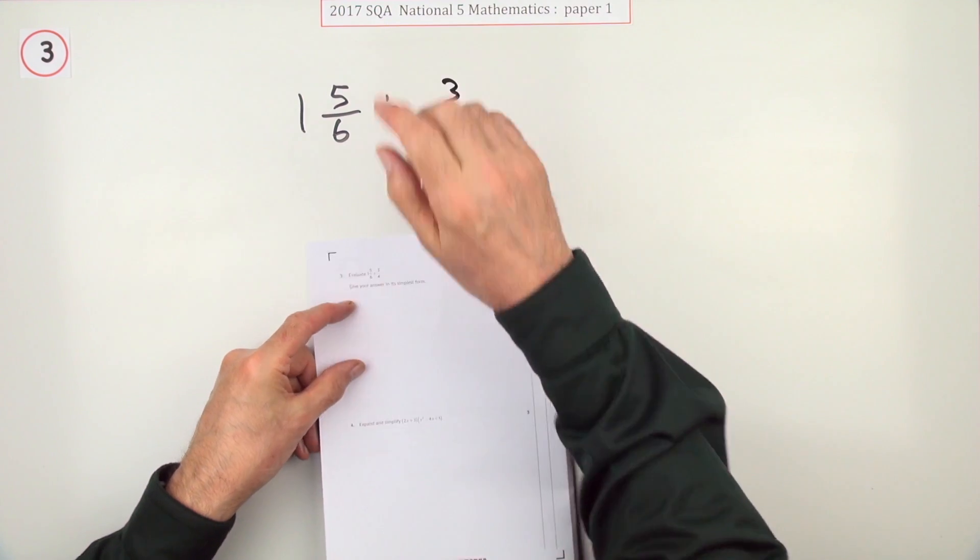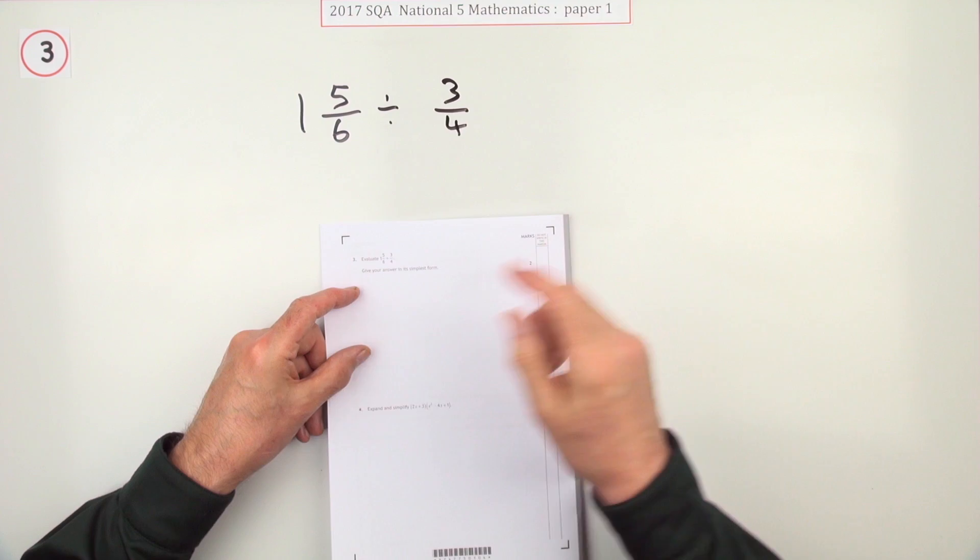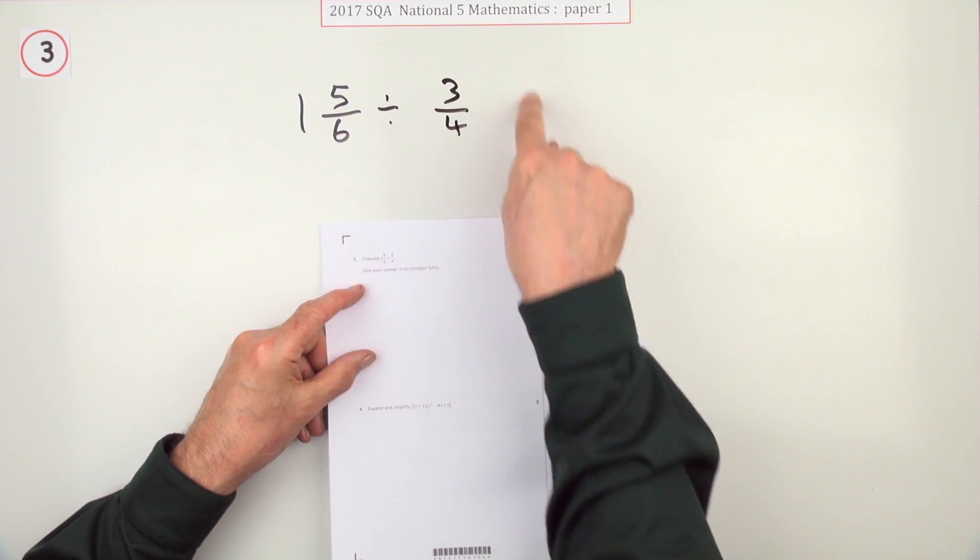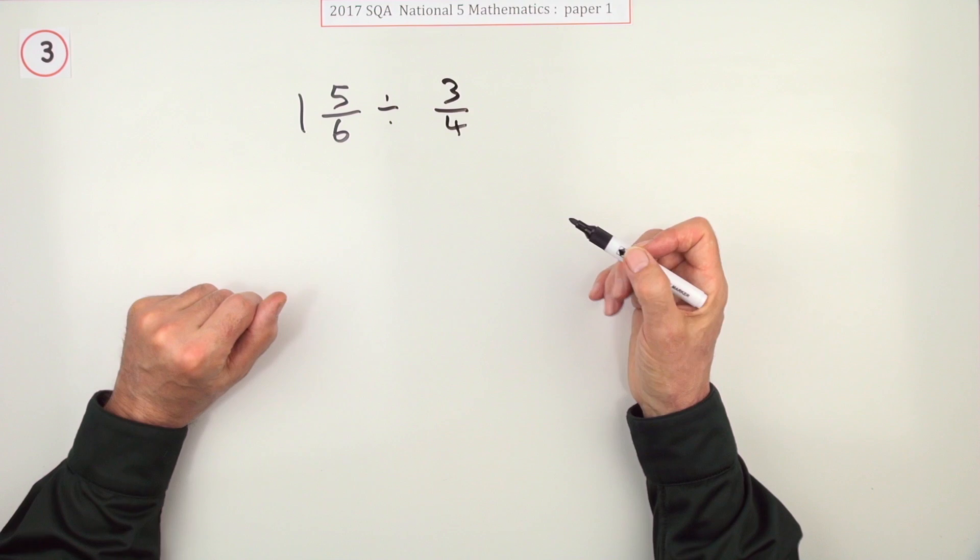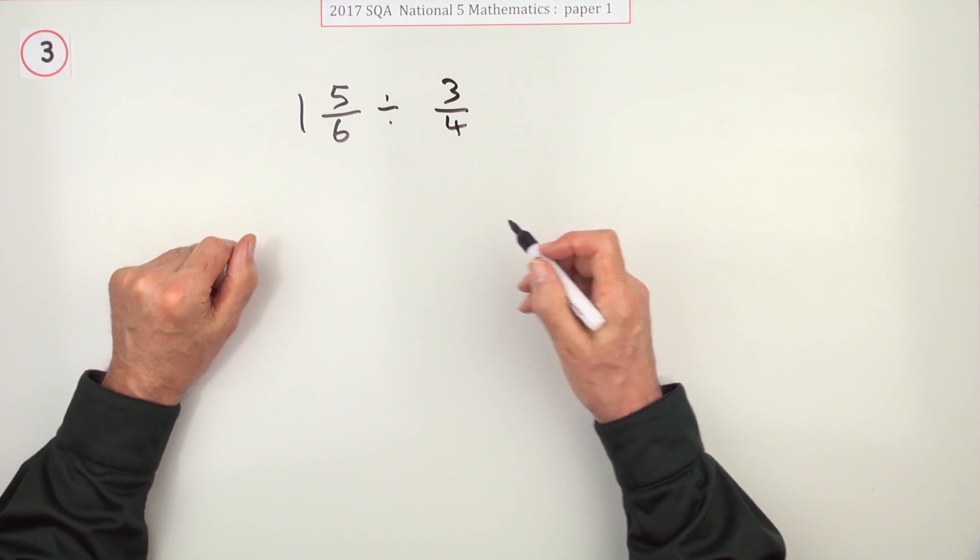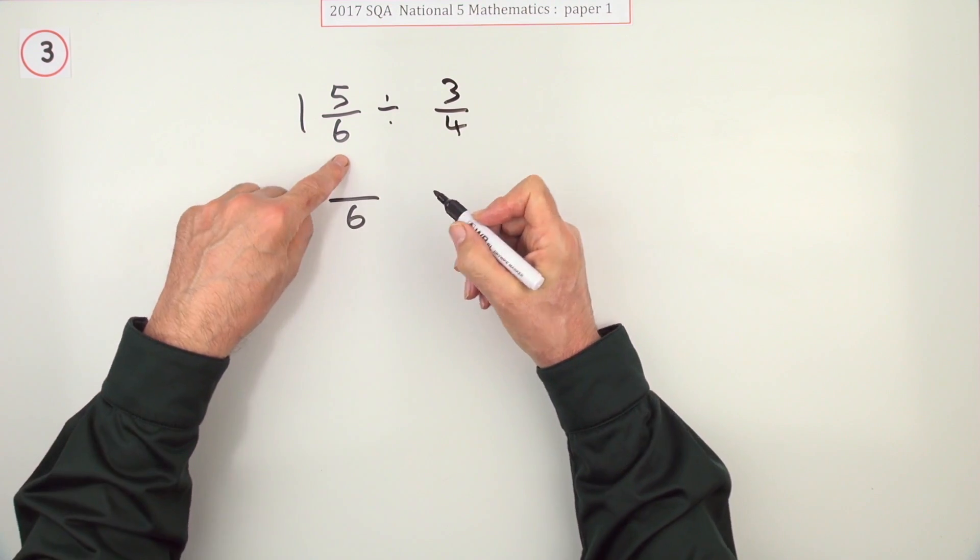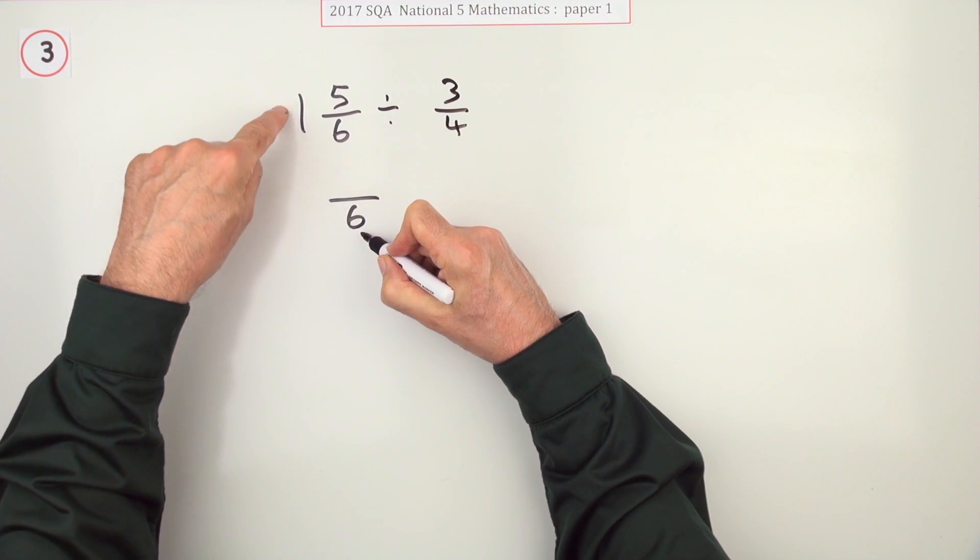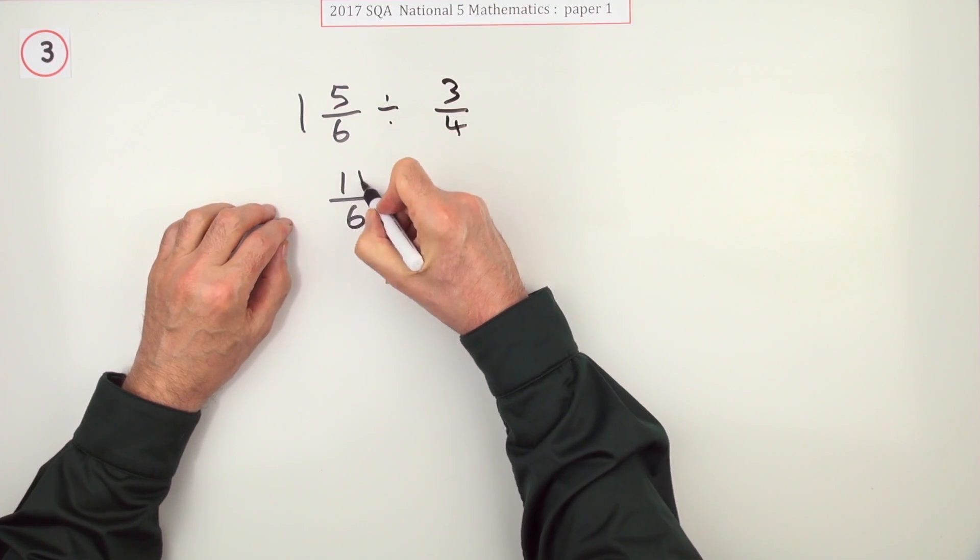Number three from the 2017. Evaluate this little calculation involving fractions. Well, there's a couple of things you need to do. If you're multiplying or dividing, you definitely will need to change them. From a mixed number, put it into an improper fraction. It's in sixths, so a whole one will give you another sixth of those to add on to the five to make 11.